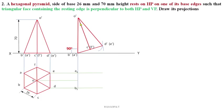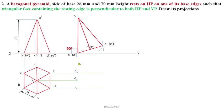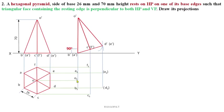Here point O and O' both meet at one point, clearly showing OAB is perpendicular to the XY reference line. OAB is the triangular face on resting edge AB, perpendicular to both HP and VP. Extend projectors from all respective corners of both front and top views to fix all six corners of the hexagon and the apex vertex. Join the boundaries with continuous thick lines: A1-O1-B1, B1-C1, C1-D1, D1-E1, E1-F1, F1-A1.